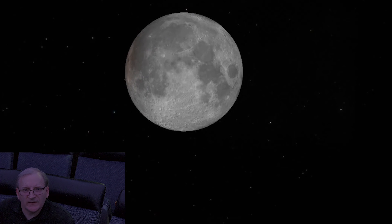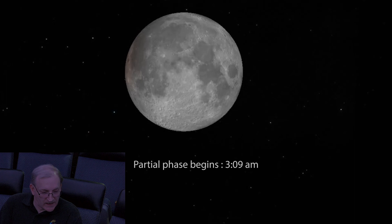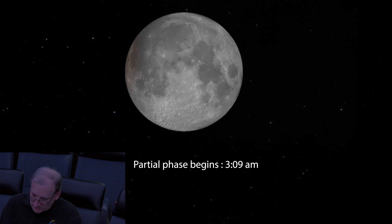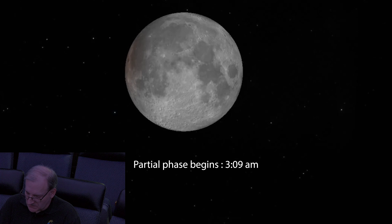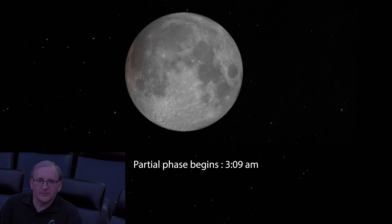The partial phase, which it looks like it is just about to begin, actually begins at 3:09 a.m. So if you're going to set your alarm, set it for about 3 o'clock or very shortly thereafter if you want to catch the first bit of shadow on the moon.